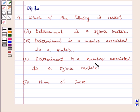C. Determinant is a number associated to a square matrix. D. None of these.